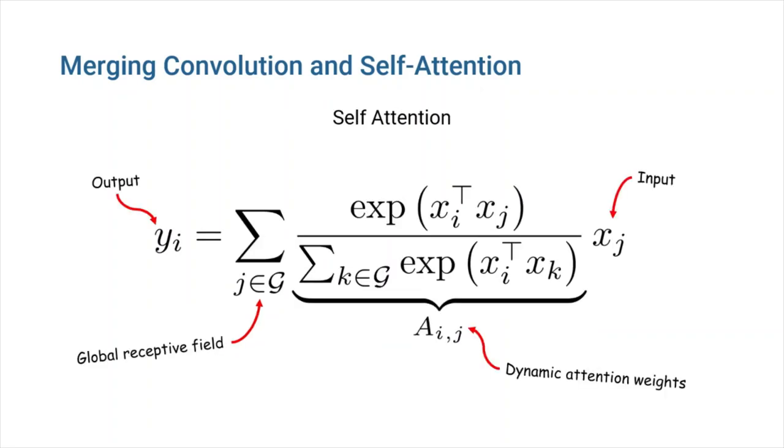And as I said earlier, self-attention allows the receptive field to be global, and instead of fixed kernels, it utilizes dynamic attention weights that vary based on the inputs.